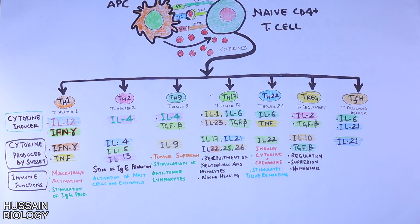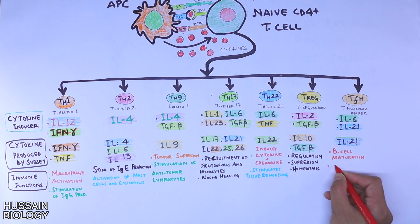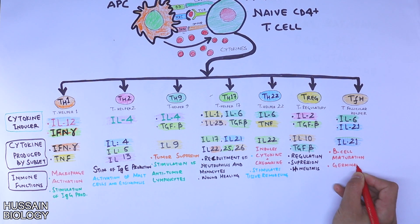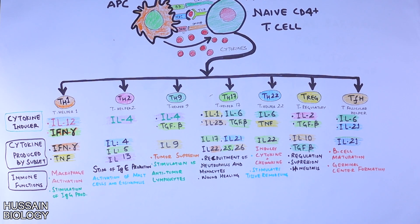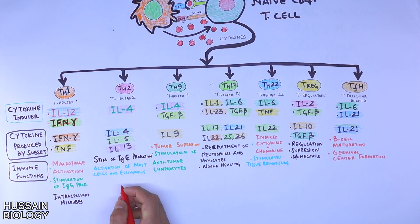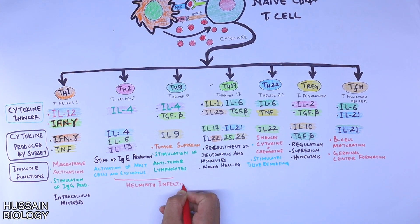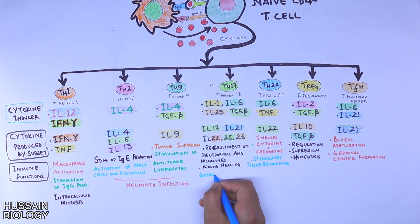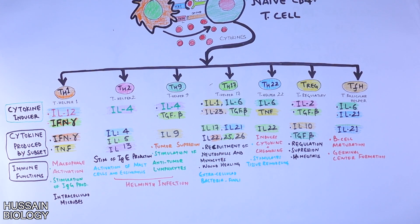T regulatory cells regulate the immune system through suppression and homeostasis. T follicular helper cells play a role in B cell maturation and germinal center formation. Also note that TH2 and TH9 play a role in helminth infection, whereas TH17 has a role in immune response against bacteria and fungi.